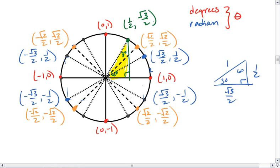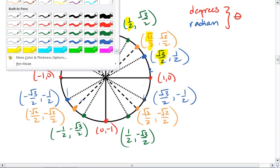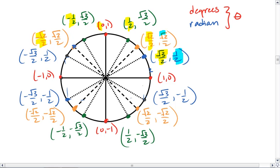Our corresponding points are now negative 1 half, positive root 3 over 2, negative 1 half, negative root 3 over 2, and positive 1 half, negative root 3 over 2. There we go. There are all my ordered pairs, where all of the x values are cosine values, and all of my y values are sine.